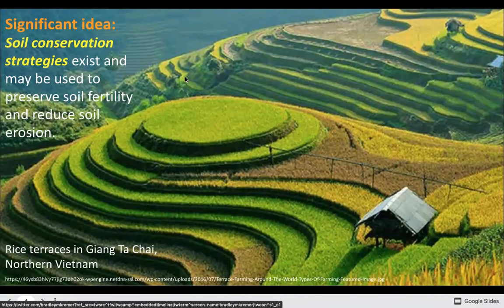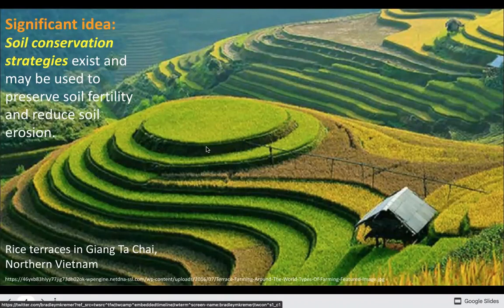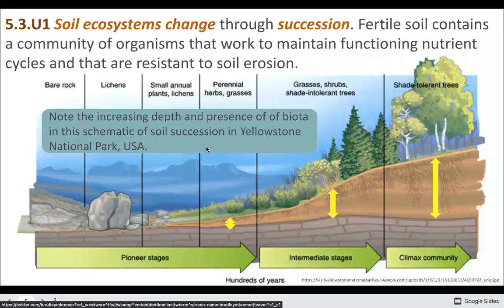We have soil conservation strategies that can preserve soil fertility and reduce erosion. Here, we're looking at reducing erosion with classic terraces. The first key understanding is that soil systems change through succession, as we've mentioned before.